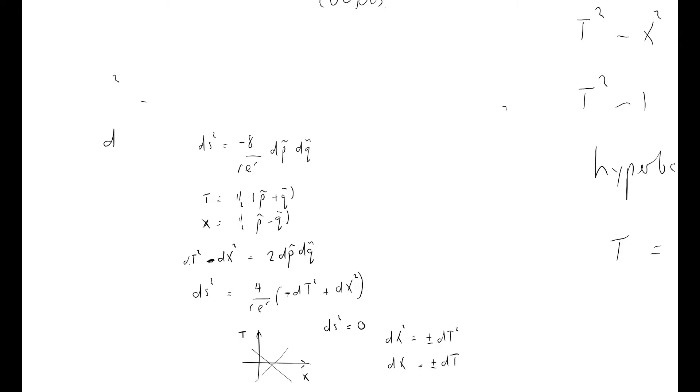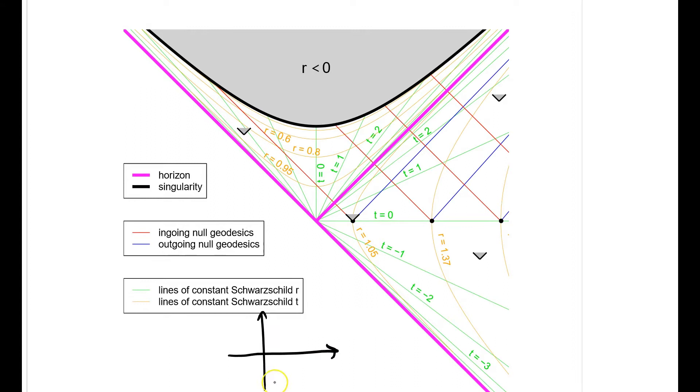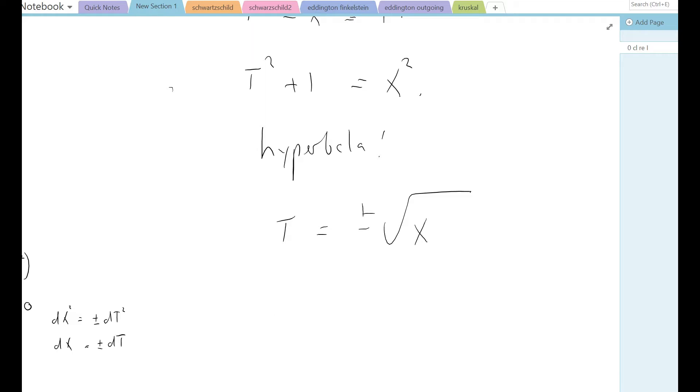Anyway, we've got these nice Kruskal-Szekeres coordinates here and I want to show you what they look like. So I've got this beautiful picture here where I've drawn them in terms of the two coordinate lines there, x and t, which are like this, and we can see various features on this diagram. The first one is this line here corresponding to t equals minus x, I guess, which corresponds to the horizon, the event horizon.